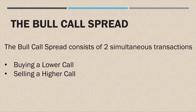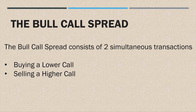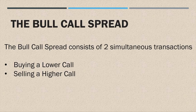The bull call spread consists of two simultaneous transactions. If you are a paid member, you must have noticed that when I put out a trade alert, I usually mention a call that you need to buy and a call you need to sell. So that's what a bull call spread is — you're buying a lower strike call and you're selling a higher strike call.